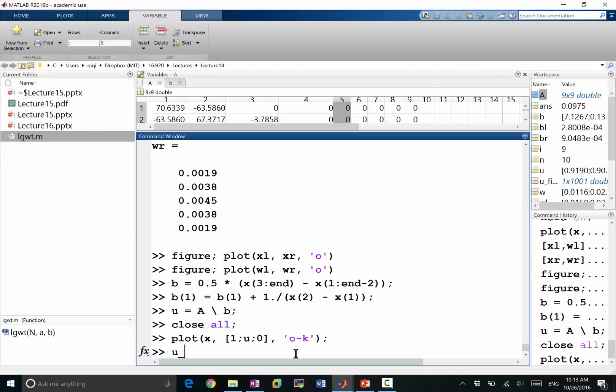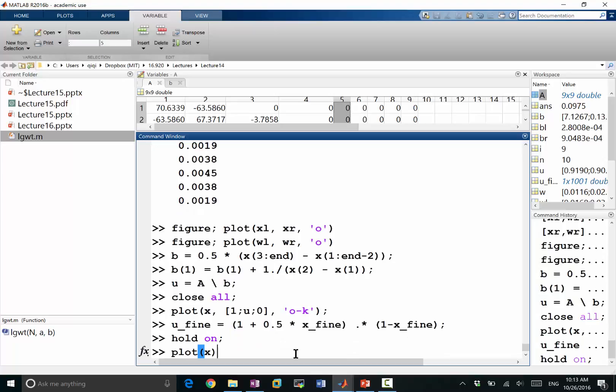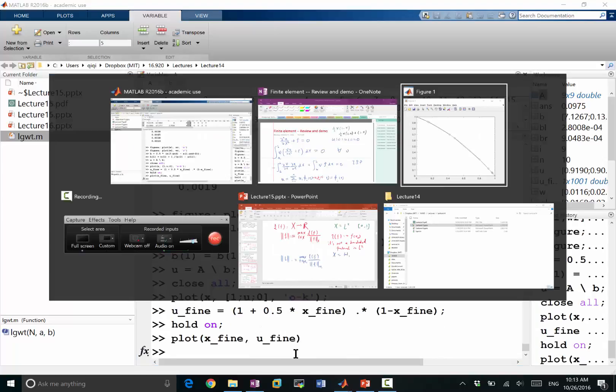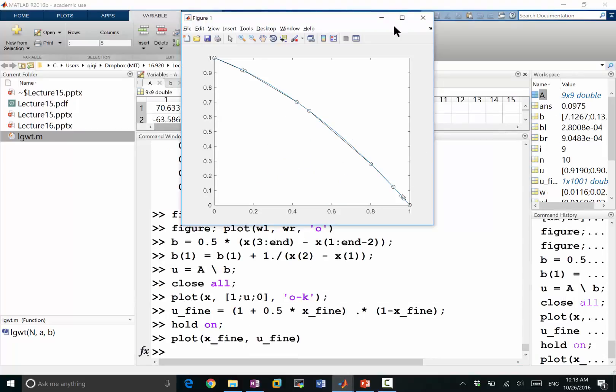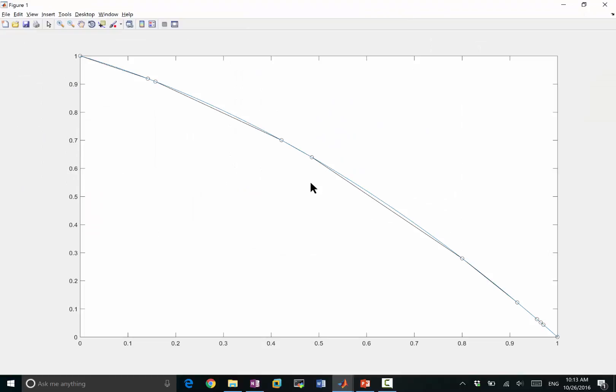So my u5 is equal to now 1 plus half of x5 times this. And let's hold on, plot x5 and u5. See, the blue line right now is the analytical solution, and the black line is the numerical solution. Again, we match pretty well.